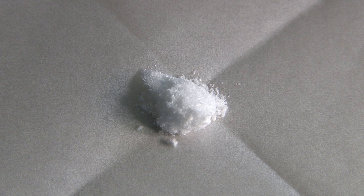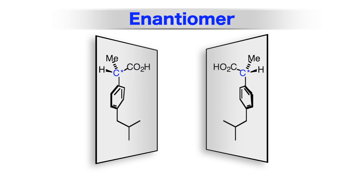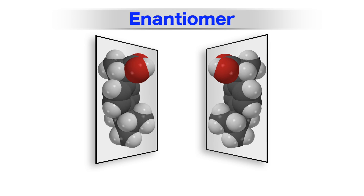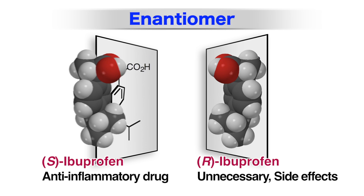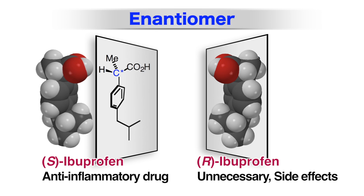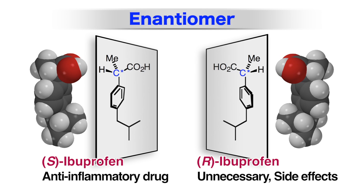A problem in the synthesis of NSAIDs is the presence of mirror image isomers, or enantiomers. Enantiomers are like one's left and right hands — they're mirror images of each other. Of these two mirror image isomers, only the S-type is medically active. The R-type may be either inactive or cause unwanted side effects.